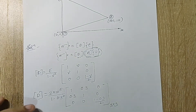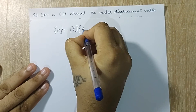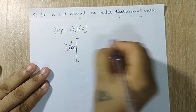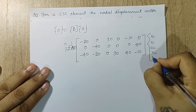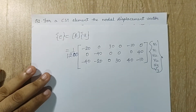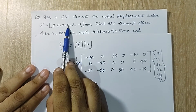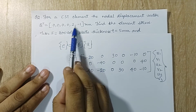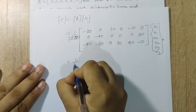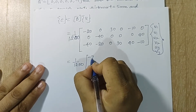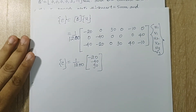Now I calculate strain: epsilon = B times u. With u = [0, 0, 0, 0, 2, minus1] mm substituted in, multiplying the B matrix by u gives epsilon = 1/1200 times [minus20, minus40, 90]. This is my strain matrix.